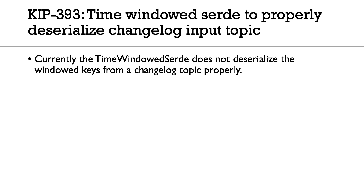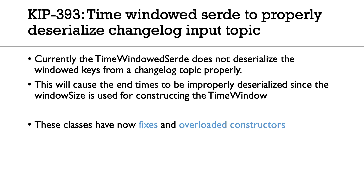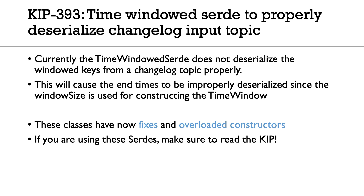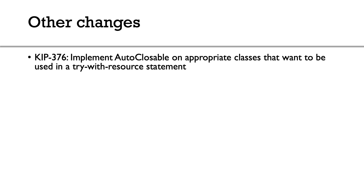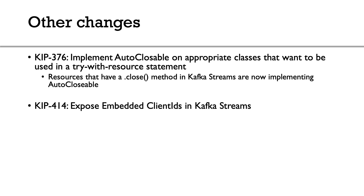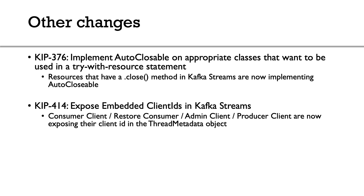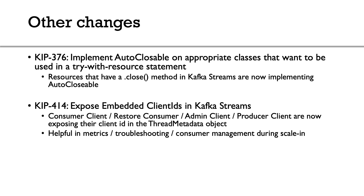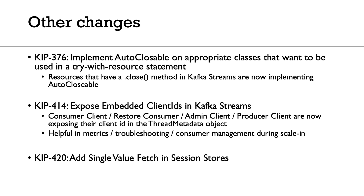KIP 393 introduces a new time window serde with overloaded constructors to fix a problem with changelog topics. If you're using this serde with windowed topics and want to deserialize them correctly, read the KIP. Also, every resource in Kafka Streams that was Closeable now implements AutoCloseable, so you can use it in a try-with-resources statement. KIP 414 exposes all client IDs of Kafka Streams clients — consumer, restore consumer, admin client, and producer — in the thread metadata objects, helpful for metrics gathering, troubleshooting, or consumer management during scale-in events. Finally, KIP 420 adds a single value fetch for session stores as an internal performance improvement.